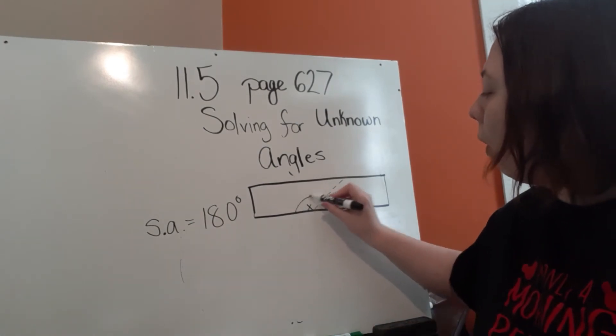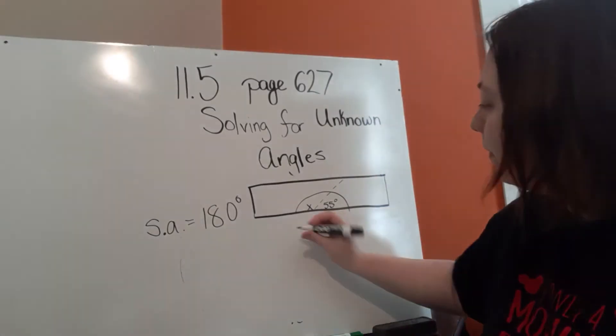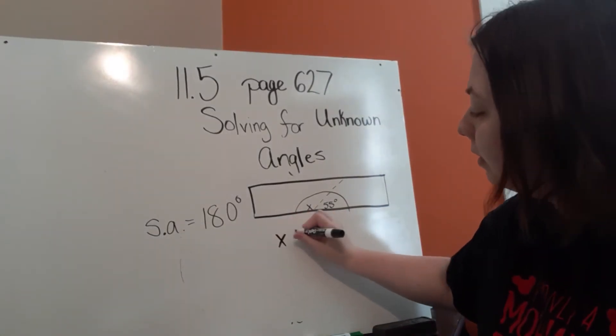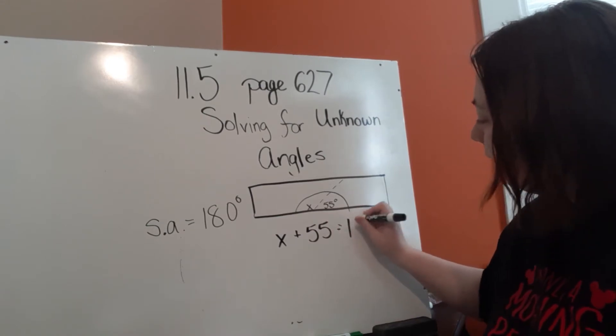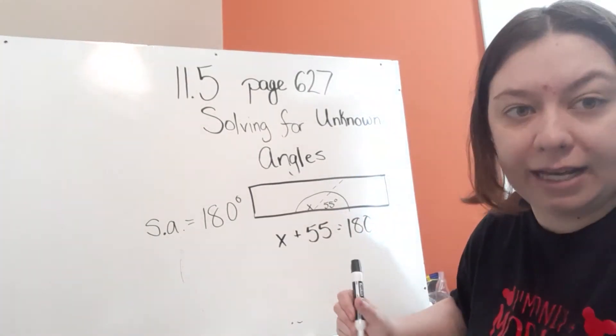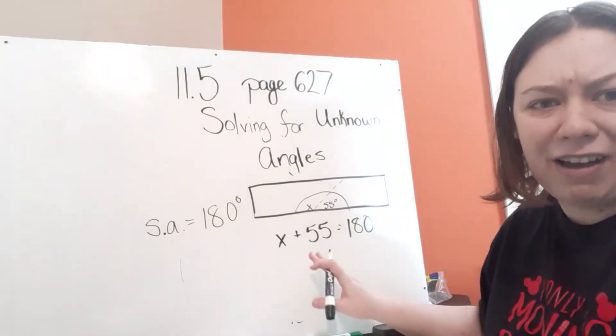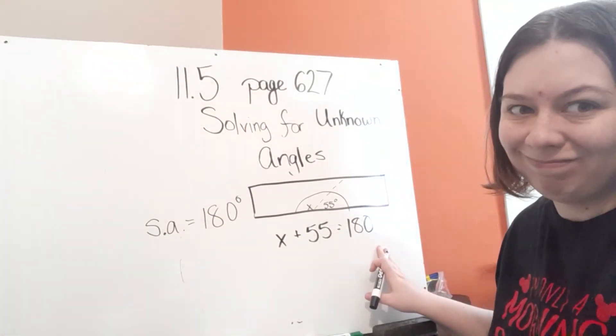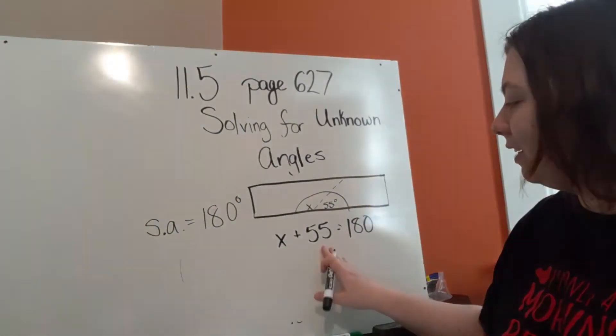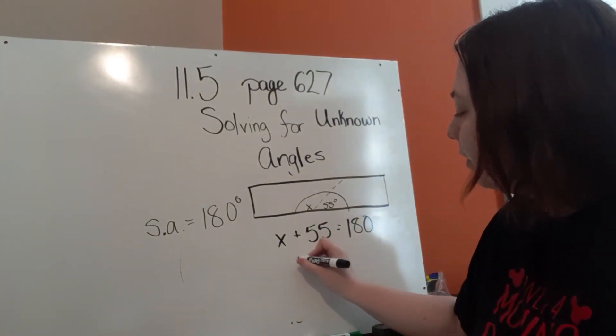So this whole angle here is 180. So we know that X plus 55 should equal 180. So would it make much sense if I actually added 55 to the 180? No, because the 55 is part of 180. So I'm going to subtract.